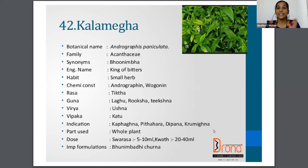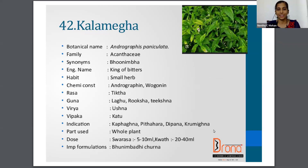The next drug is Kalamegh, botanical name Andrographis paniculata, family Acanthaceae. The synonym is Bhunimba and the English name is King of Bitters. The whole plant is used. The dosage of Swarasa is 5 to 10 ml and Kwatha is 20 to 40 ml.